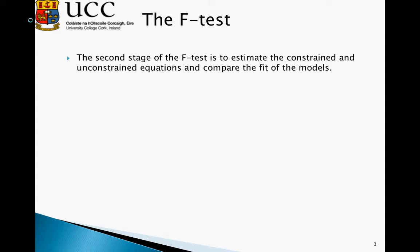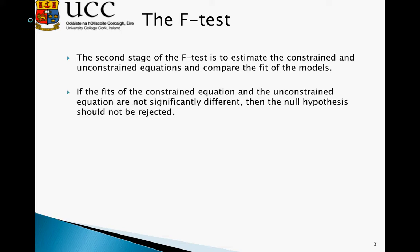The second stage of the F test, after we've designated our null and alternative hypotheses and specified our restricted and unrestricted equations, is to estimate these two models and then compare the fit of them. If the fits of the constrained and unconstrained equations are not significantly different, then the null hypothesis should not be rejected. This essentially states that the constrained equation explains the data just as well as the unconstrained equation.